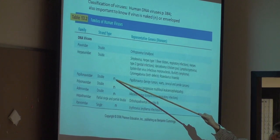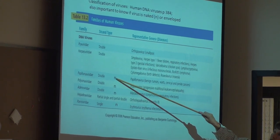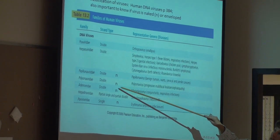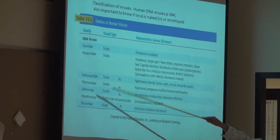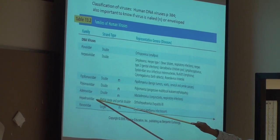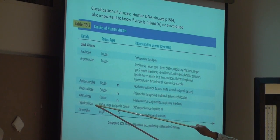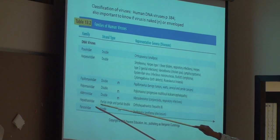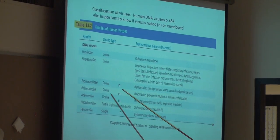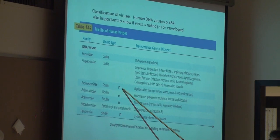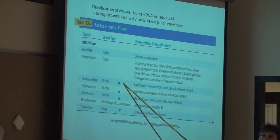I've modified this table so that if it's a naked virus, I put an N there. Poxviruses, herpesviruses, and hepadnaviruses and hepatitis B viruses are DNA viruses and they're enveloped. The only DNA virus we'll discuss that lacks an envelope — that's naked — will be the papillomaviruses, the so-called wart viruses.